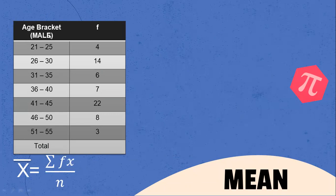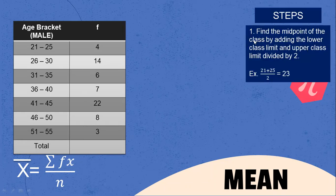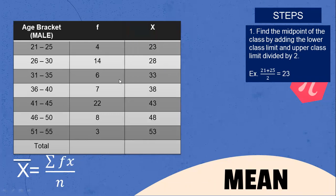Given the age bracket for male respondents: four males are aged 21 to 25, 14 males are aged 26 to 30, and so on. The first step is to find the midpoint of each class by adding the lower and upper class limits divided by 2. So 21 plus 25 is 46 divided by 2, giving 23; 26 plus 30 is 56 divided by 2; 31 plus 35 is 66 divided by 2; 36 plus 40 is 76 divided by 2; 41 plus 45 is 86 divided by 2; 46 plus 50 is 96 divided by 2; and 51 plus 55 is 106 divided by 2.